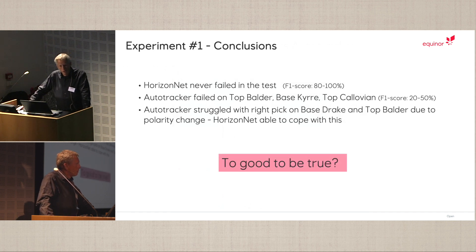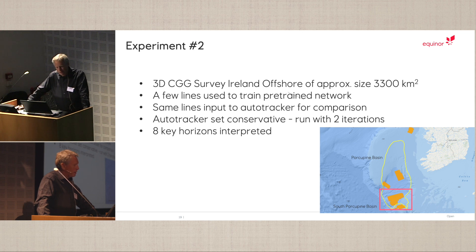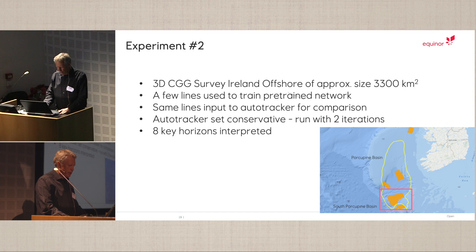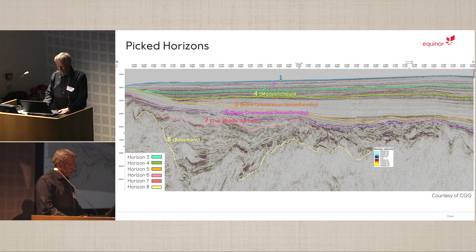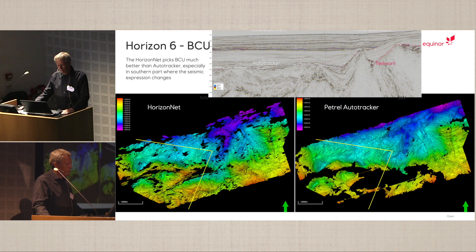The natural question was: was this too good to be true? We then performed our second experiment this summer. Due to some export license issues, we picked a survey outside Ireland since the cloud is on the island, so we managed to work around that. We chose the Porcupine Basin and, as before, wanted to compare results with the auto-tracker. There were eight key horizons and we focused mainly on the lowest stratigraphy.